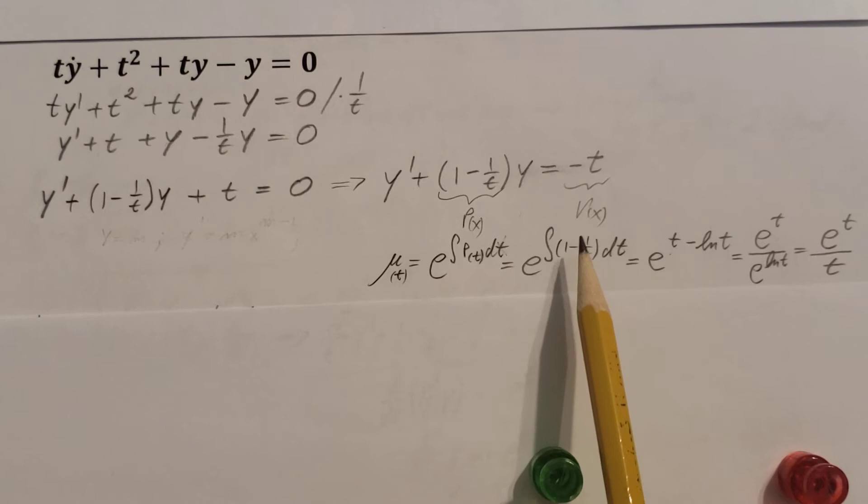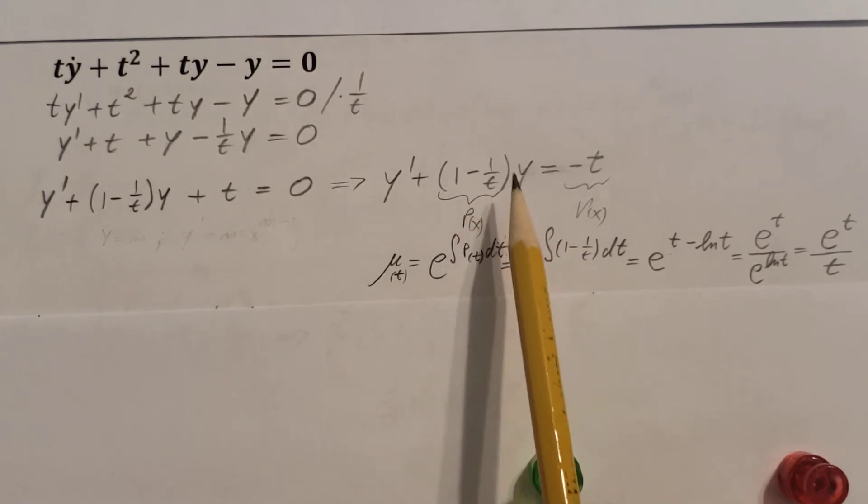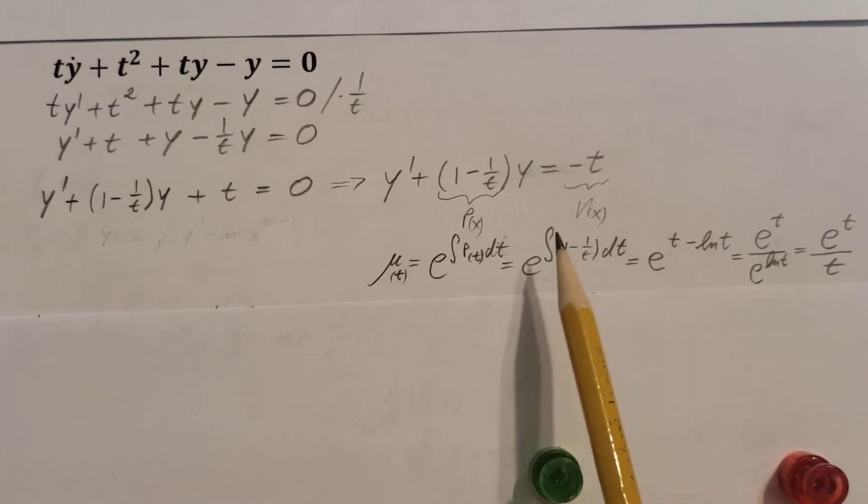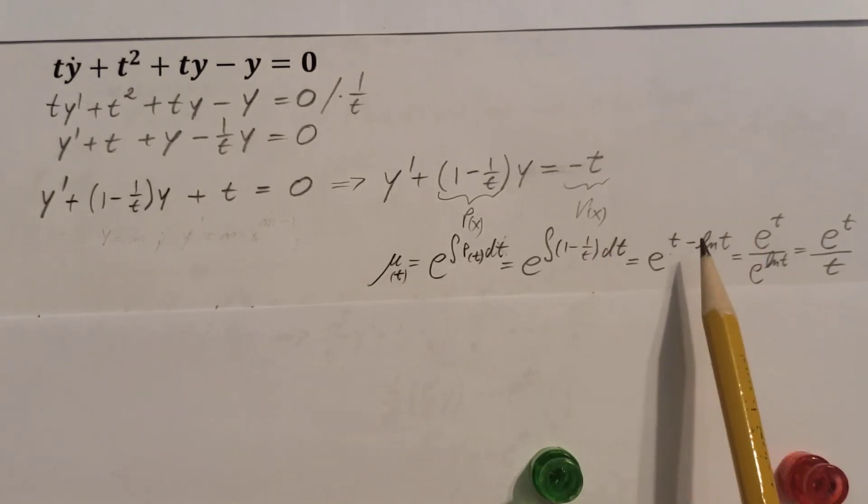1 minus 1 over t, that's our p, everything that's inside the parentheses. Take the integral. Integral of 1 is t, integral of minus 1 over t is minus ln t.